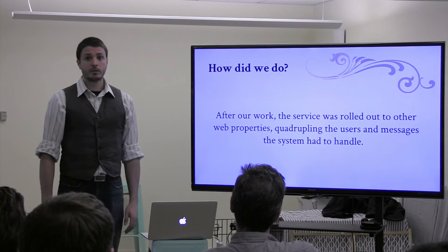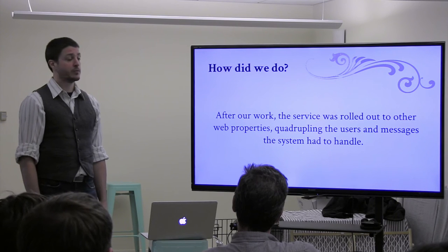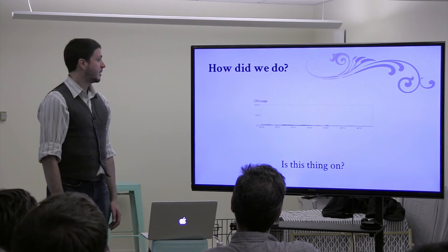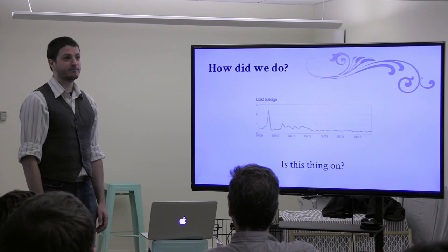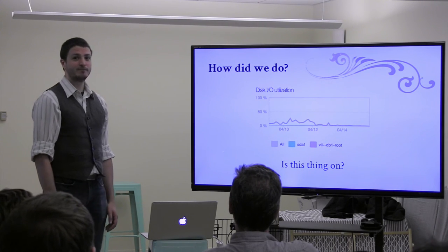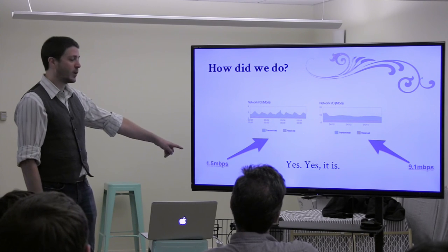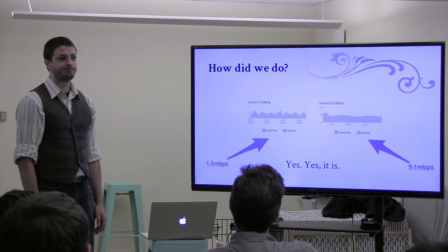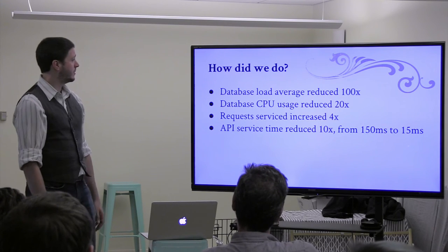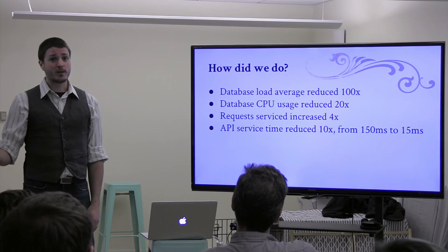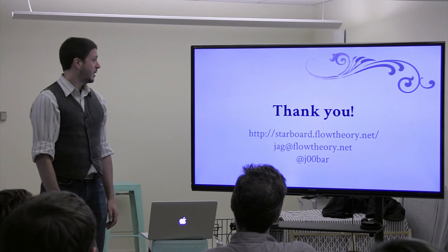Going back to the changes we made: we denormalized our data model very surgically, crafted indexes based specifically on the questions we were asking most often, made sure we only queried text fields when needed to get the most out of in-memory sorting, used Redis to structure-cache user inboxes so we didn't have to hit Postgres nearly as much, and used HTTP cache headers to avoid unnecessary work. The results: we reduced the database load average by 100 times, database CPU dropped 20 times, all while the request service rate quadrupled. API service time went from 150 milliseconds down to 15 milliseconds.